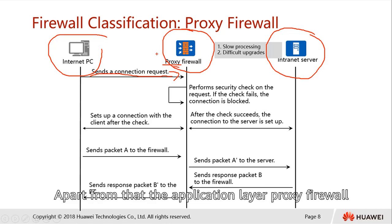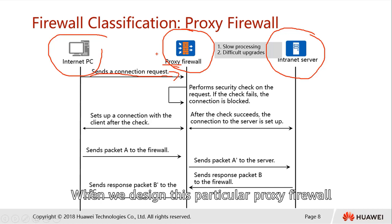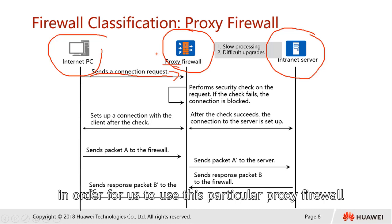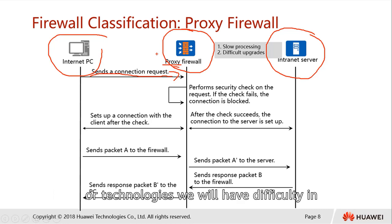Apart from that, the application layer proxy firewall also needs to be specially designed for every different kind of protocol. When designing this proxy firewall, it may take quite some time, and we need to allocate special resources to use it. Hence, if there is any sort of new incoming protocol or technology, we will have difficulty upgrading our firewall in the short term.